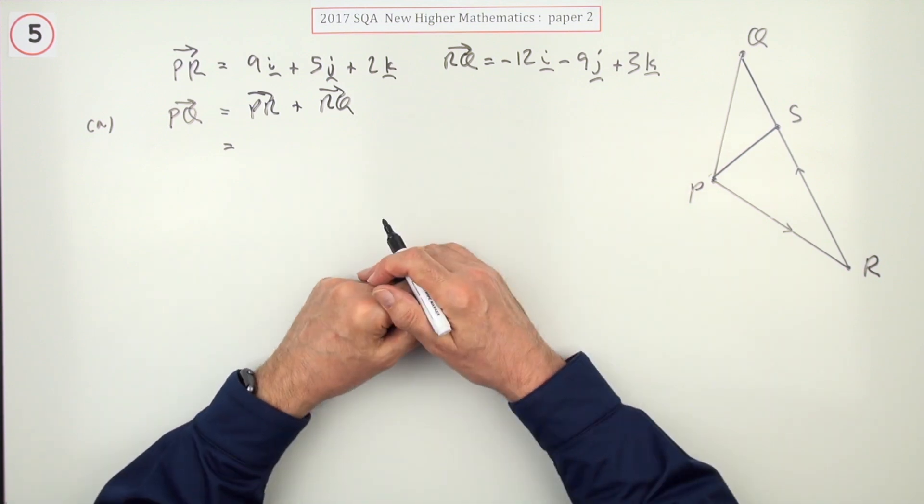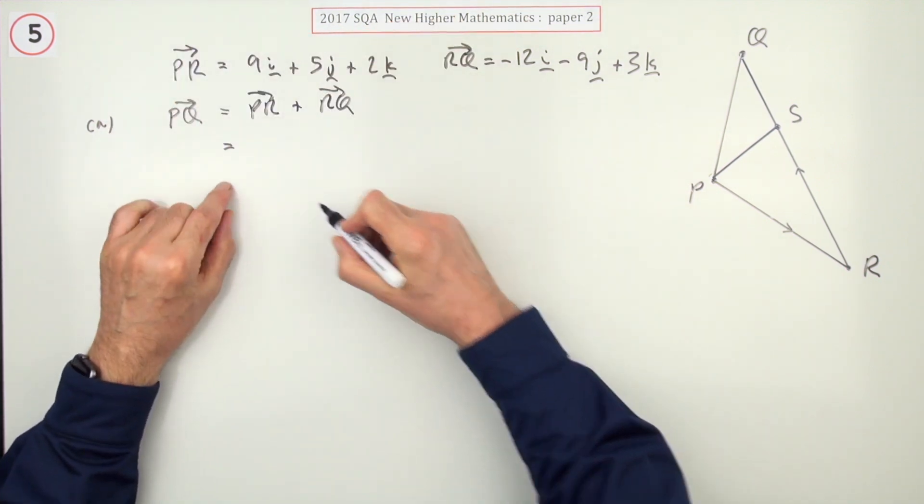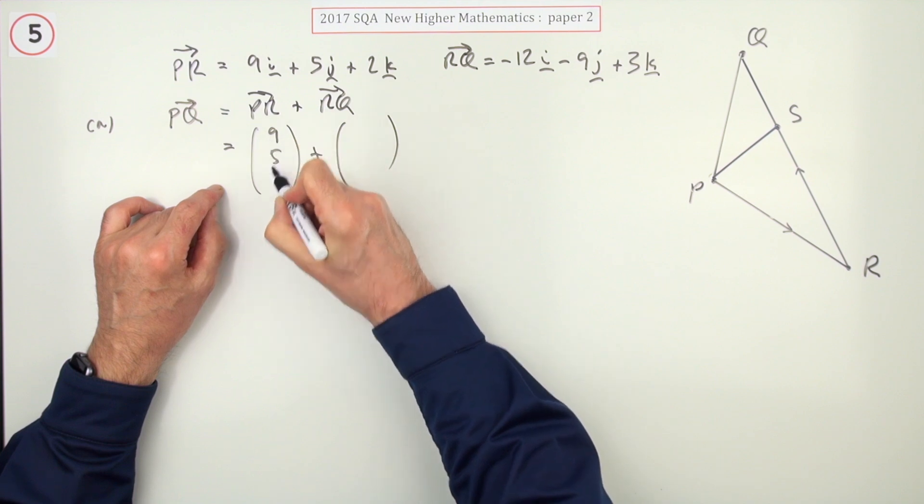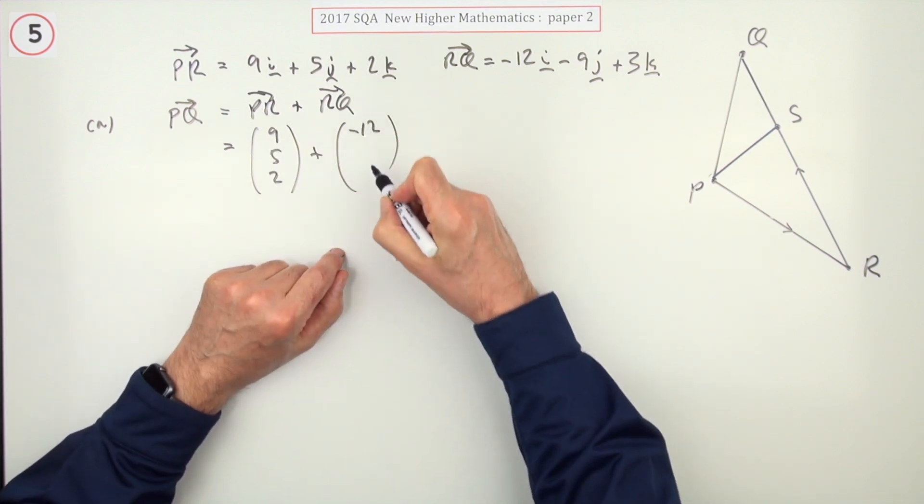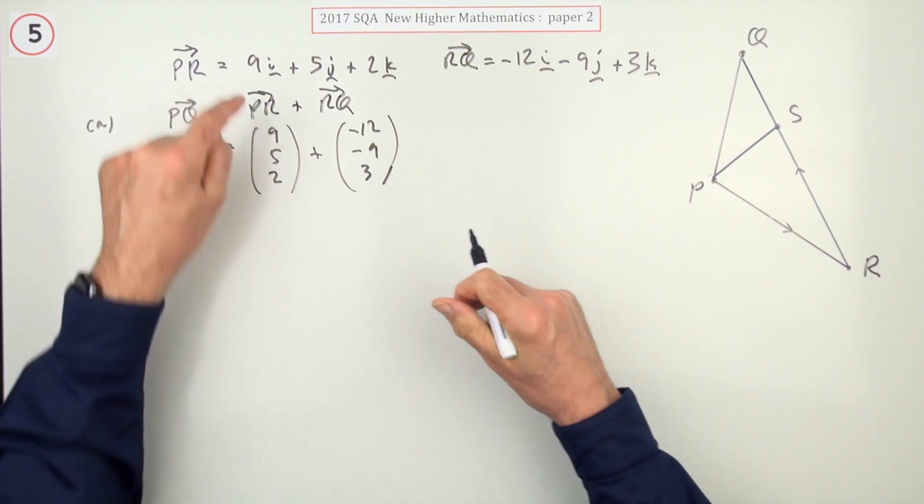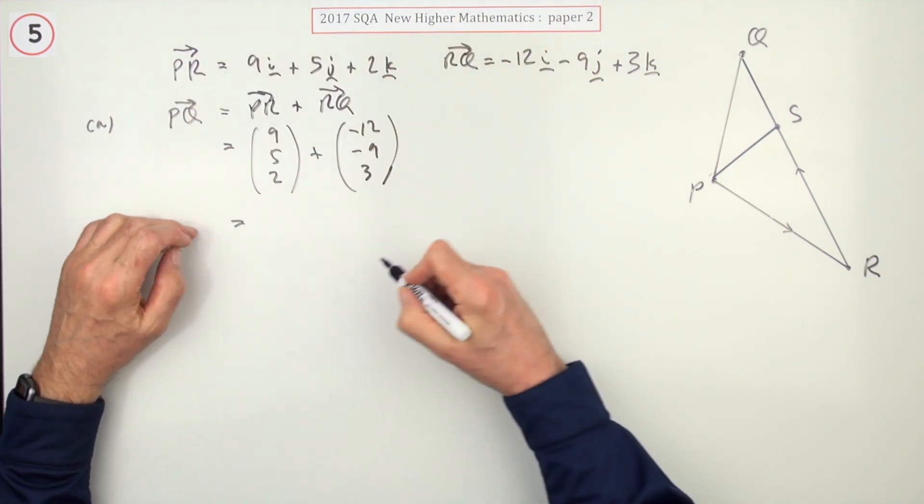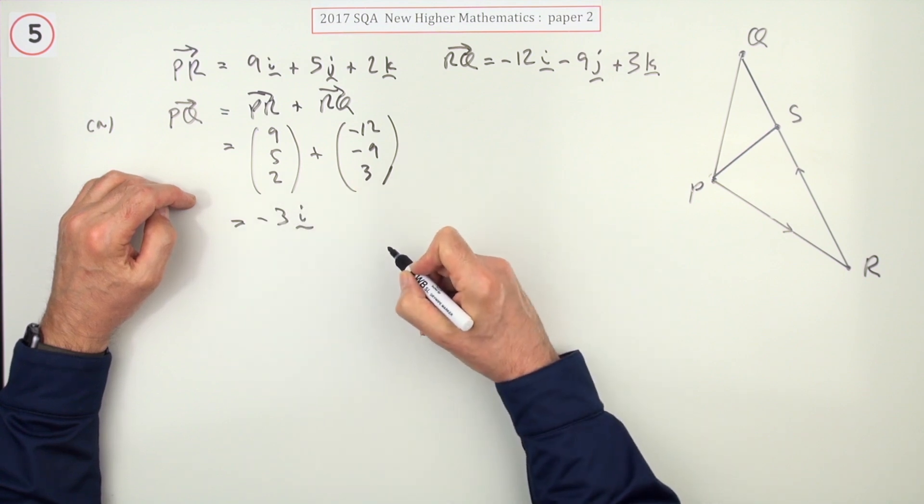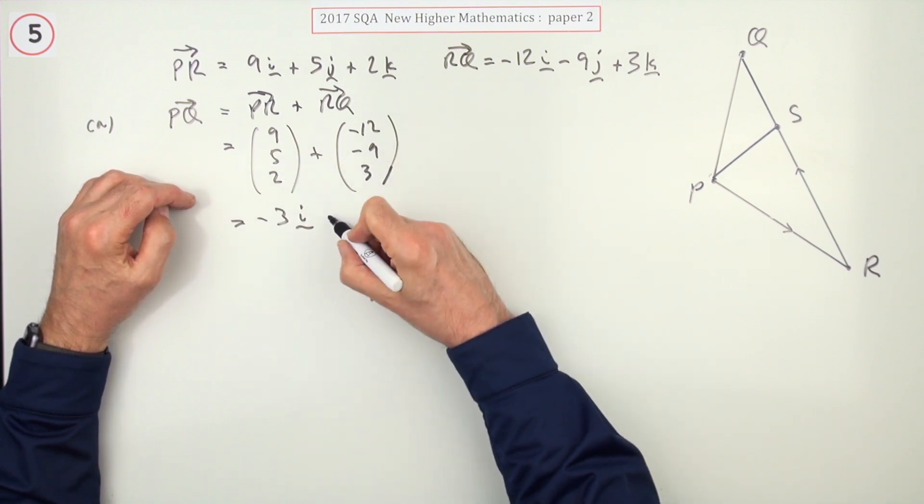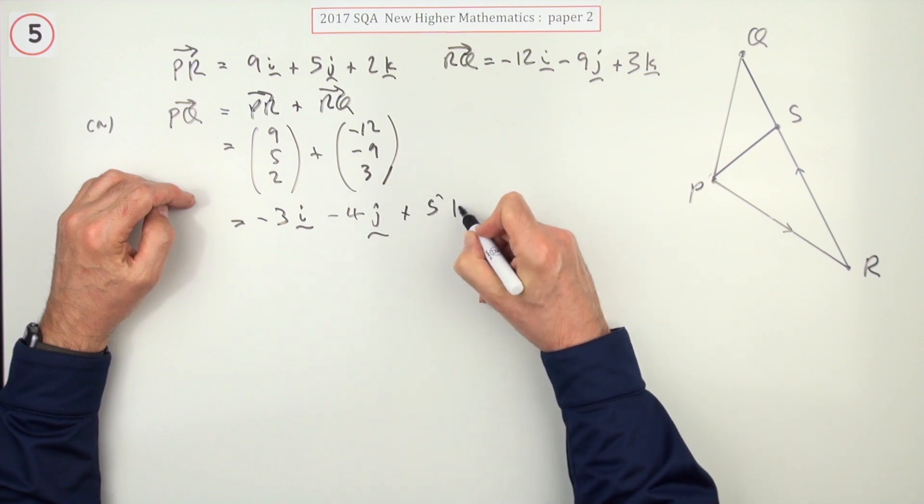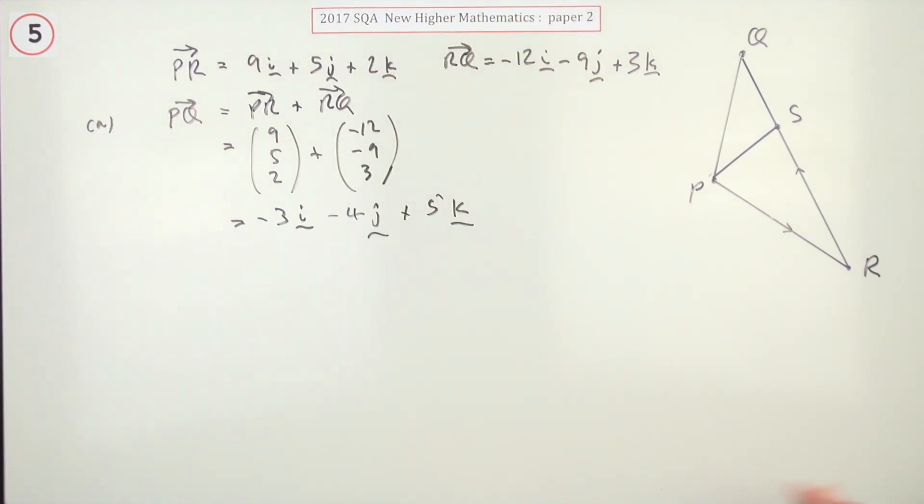Do you need to show the working for this? It's only two marks. I'll write this down, though I'm sure you wouldn't be penalized if you just added those components there and stated it. Nine take away twelve is negative three, so it's negative 3i. Five take away nine is minus four, so it's minus 4j. Two and three is five, so it's 5k, which you could just have read off from the three parts.